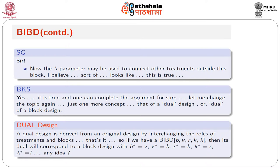Let me change the topic. Just one more concept we need: the concept of a dual design, or dual of a block design. This dual design is derived from an original design by interchanging the roles of treatments and blocks. If we have a BIBD with parameters v, b, r, k, lambda, then its dual design corresponds to a block design with v* = b, b* = v, r* = k, k* = r.